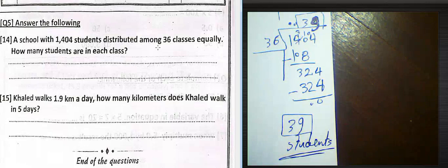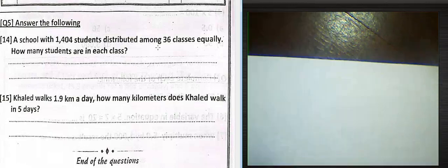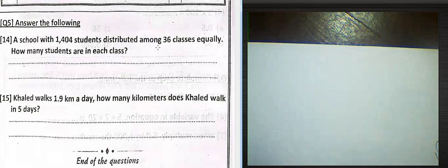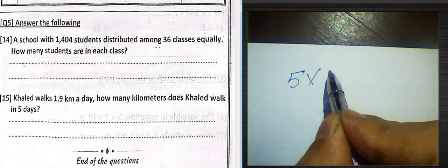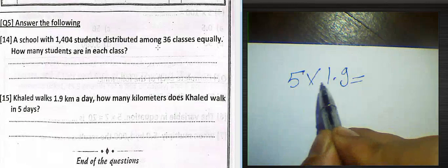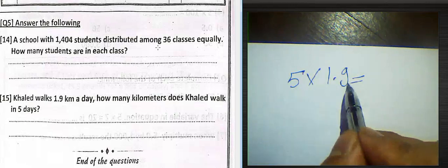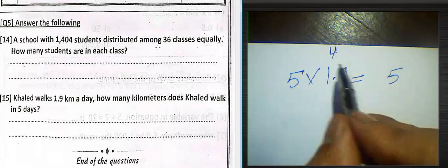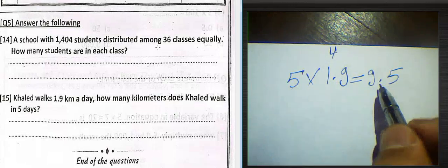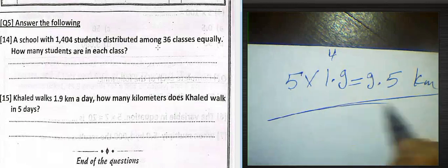Question 15. Look at question 15 here. Khalid walks 1.5 kilometers a day. How many kilometers does Khalid walk in 5 days? We can find the total by multiplication. 5 multiplied by 1.5. 5 times 9 equals 45, write 5 and carry 4. 1 times 5 equals 5 plus 4 equals 9. The result will be 9.5 kilometers.